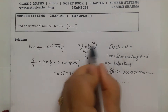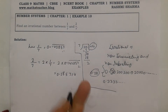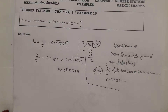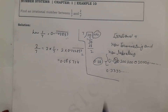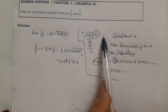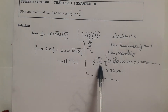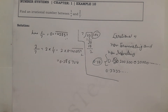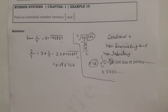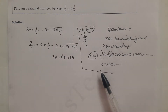So now between 0.14 and 0.28, we need to find one irrational number. Any number like 0.15 or 0.20 will work, because between 0.14 and 0.28 there are infinitely many irrational numbers you can write.